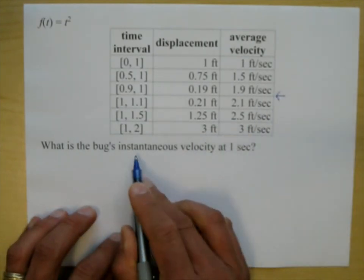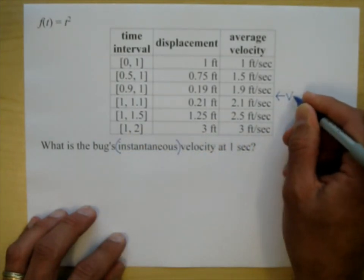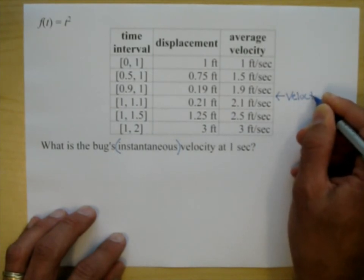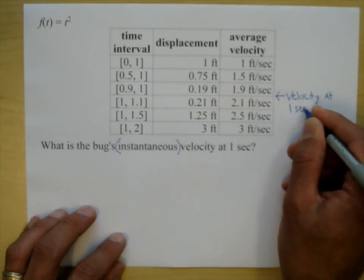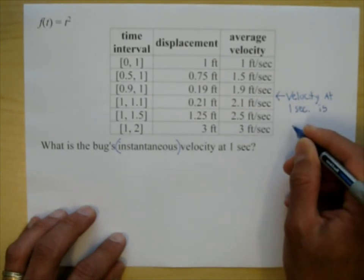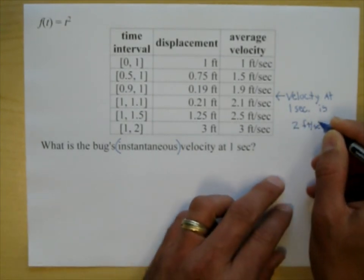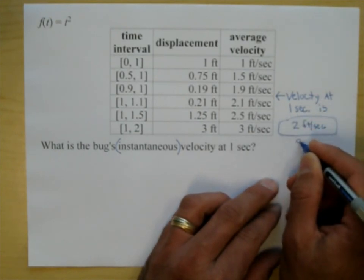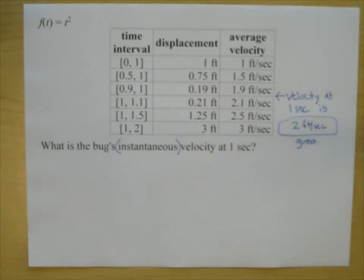We said the instantaneous velocity could also just be called the velocity, and we took a guess. The velocity at 1 second, we guessed, is 2 feet per second. In math, we don't really like to use the word 'guess,' but that's what we did — that's the best we could do back then. Now I'm going to show you something pretty neat.